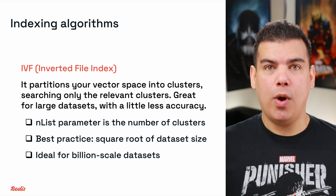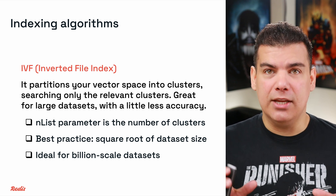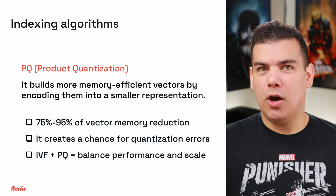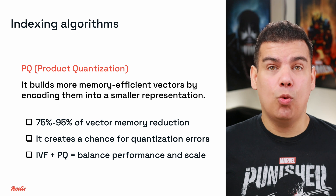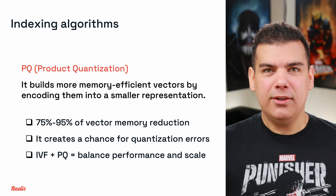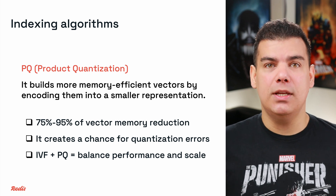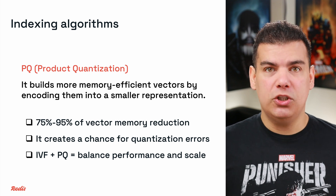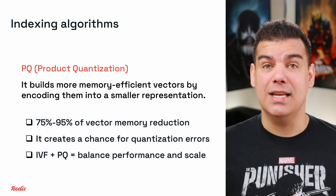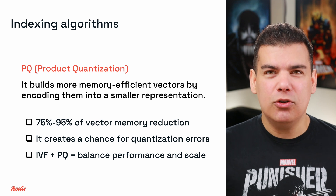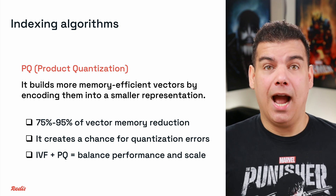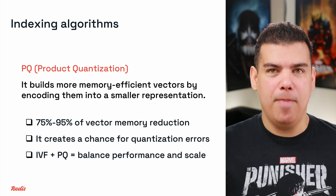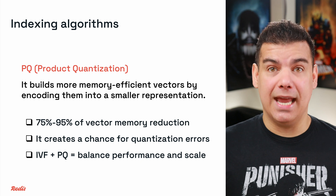Setting N-List to the square root of your dataset size is a good starting point. The other algorithm you can pursue is called product quantization. It compresses vectors by encoding them into a smaller representation. This can reduce memory by 75 to 95%, but introduces quantization error. IVF-PQ combinations are common for balancing performance and scale.